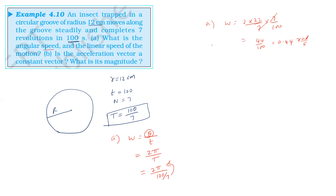Omega is the first result. Second, is the acceleration vector a constant vector? Acceleration is omega squared times r, and it always acts towards the center — centripetal acceleration. Its direction is always towards the center.